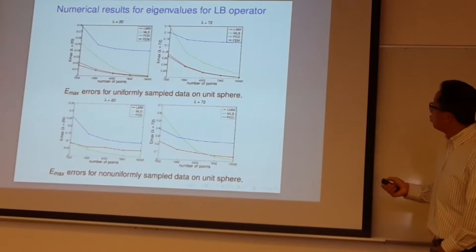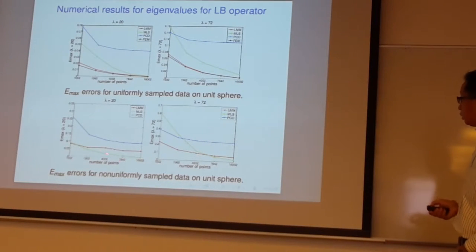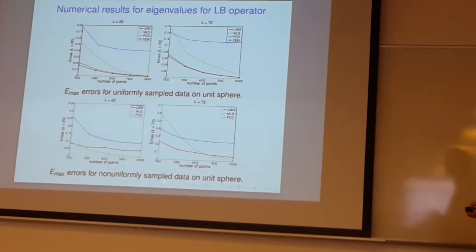This is for uniform, quite uniform. This is for non-uniform sample data. The finite element is not shown here because the triangulation through the non-uniform point cloud - you cannot find the stable finite element method to solve it. And ours we don't depend on the triangulation of the point cloud.